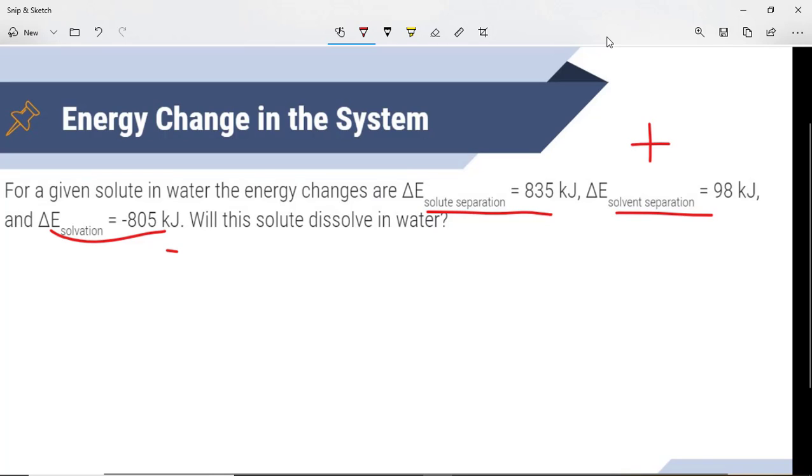So all we need to do is get the delta E of the total solution. And in order to do that, we just add all three of these together. It's really simple. So we're going to take 835, adding 98, adding negative 805.